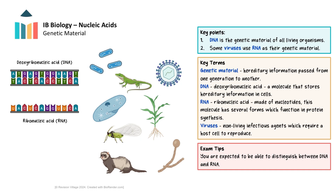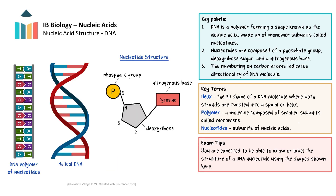Let's take a closer look at the structure and function of DNA and RNA. The structure of DNA was first described by scientists James Watson and Francis Crick in 1953. Their model of the DNA double helix was based on experimental data from several researchers, particularly Rosalind Franklin and Maurice Wilkins, whose X-ray diffraction images of DNA were crucial in understanding the molecule's structure. Watson and Crick's model revealed how DNA replicates and carries genetic information. The DNA structure is made up of two individual DNA strands twisted into a helix, and the double helix structure allows DNA to be tightly coiled and efficiently packaged into the cell's nucleus.